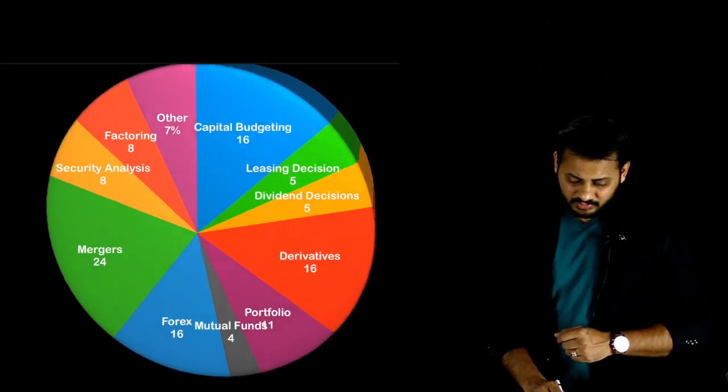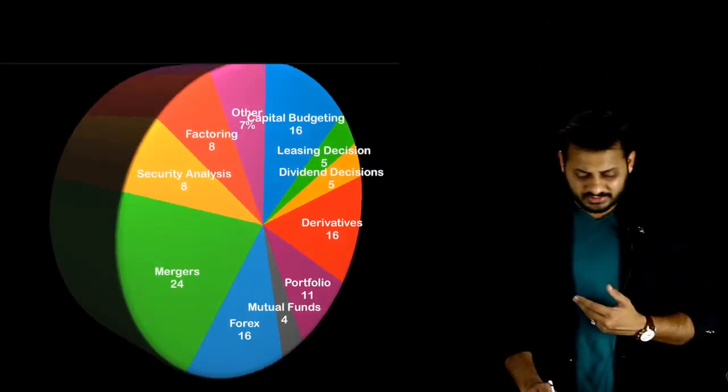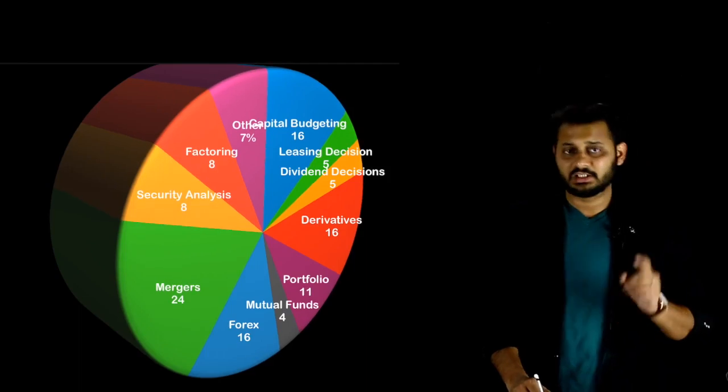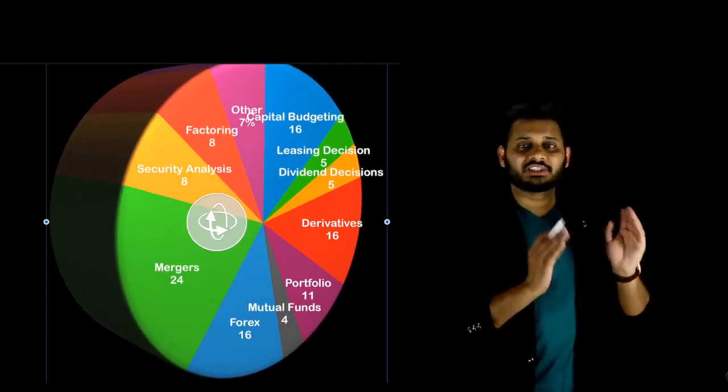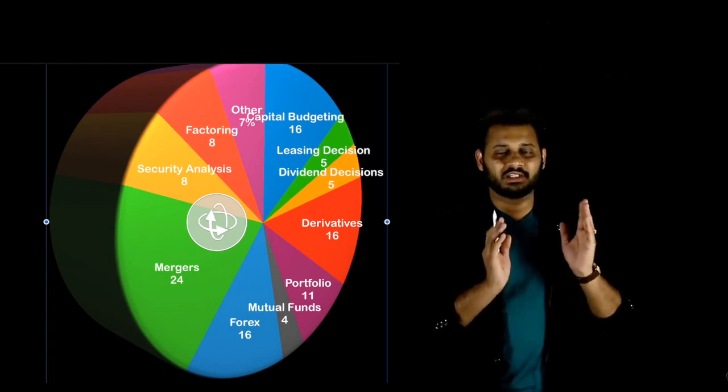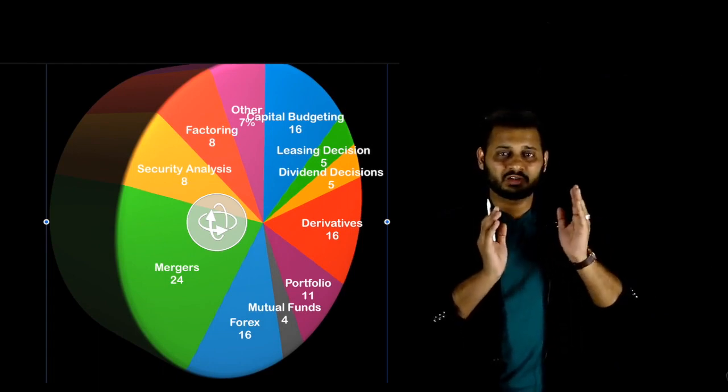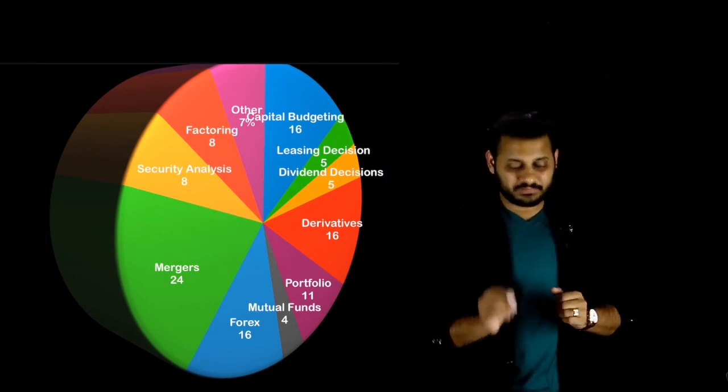And if you talk about the rest of the chapters, it's like Leasing Decision 5 marks, Dividend Decision 5 marks, Security Analysis 8 and Factoring 8 marks. These two chapters were missing on the 3rd November paper but questions have been asked today in the 17th November paper.